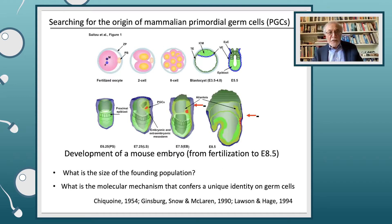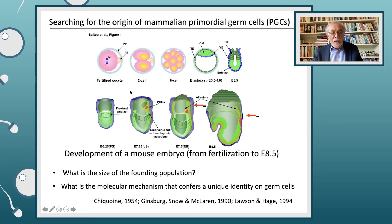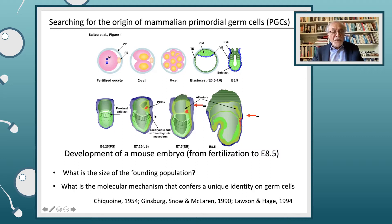One of the questions that was of great interest to Anne was the origin of mammalian primordial germ cells. Here is the development of the mouse embryo from fertilization up to day 8.5. There was quite a lot of debate about where these germ cells come from. The original work was by someone who found, by histochemical staining, some cells which formed a cluster, and he predicted this might be germ cells.